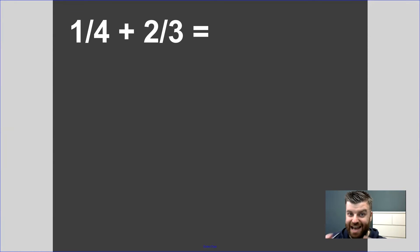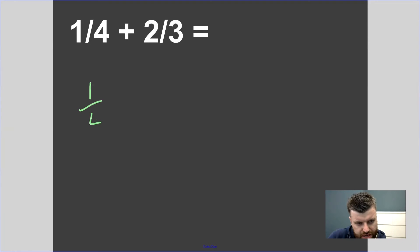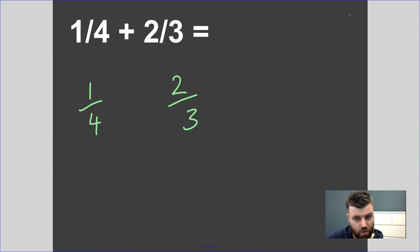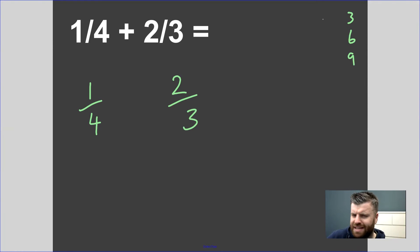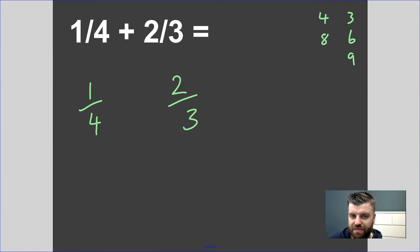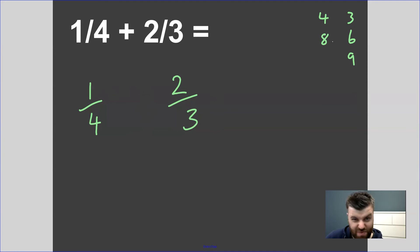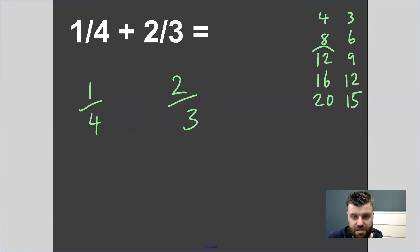Now there is one more level of difficulty — when one denominator does not go exactly into the other and you have to change both. Take this question: one quarter plus two thirds. If we count in threes, do we ever get to four? Three, six, nine — no. Do we get to three counting in fours? Four, eight — no, we're already above three. So what we have to do in this case is find a common multiple: a number that is in both the four times table and the three times table. Write them out — you may notice the first number appearing in both is twelve.